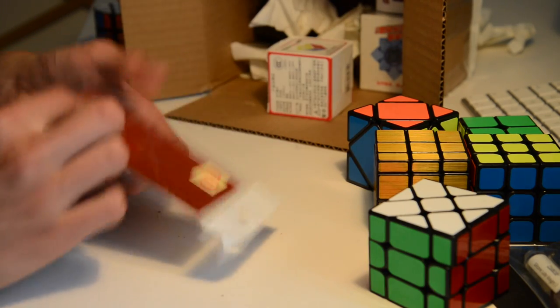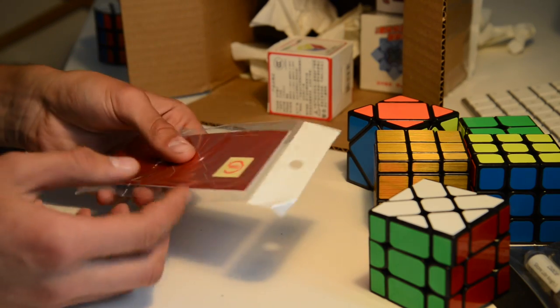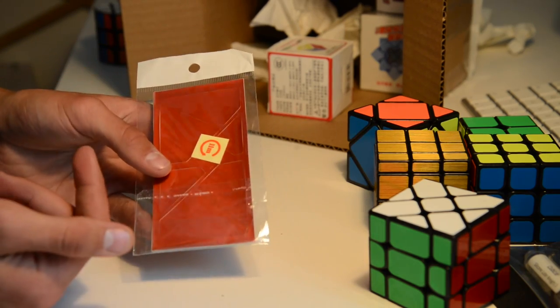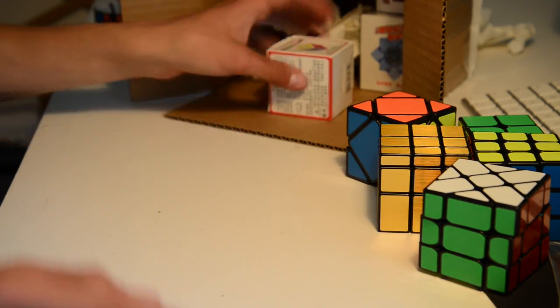Next up we have some stickers. This is for the ghost cube. I got the red stickers for the 2x2 ghost cube. That is cool.